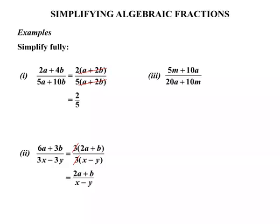Our third example, 5m plus 10a all over 20a plus 10m. Well to factorise the top, can we think of a common factor? 5 is common. So we put the 5 and then brackets. Now to get 5m, that is 5 times m. And to get the 10a, that's 5 times positive 2a.